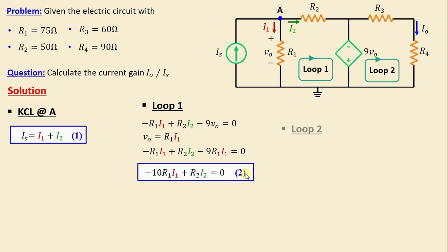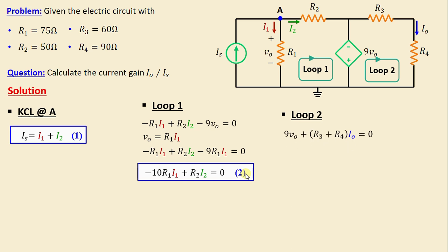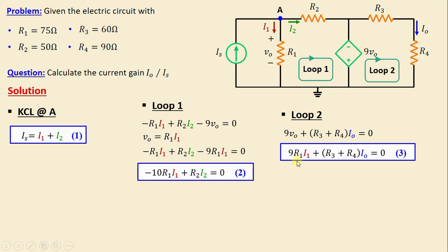Applying KVL in Loop 2, we write: 9·Vo + (R3 + R4)·IO = 0. Replacing Vo with R1·I1, we obtain: 9·R1·I1 + (R3 + R4)·IO = 0. We'll call this Equation 3.